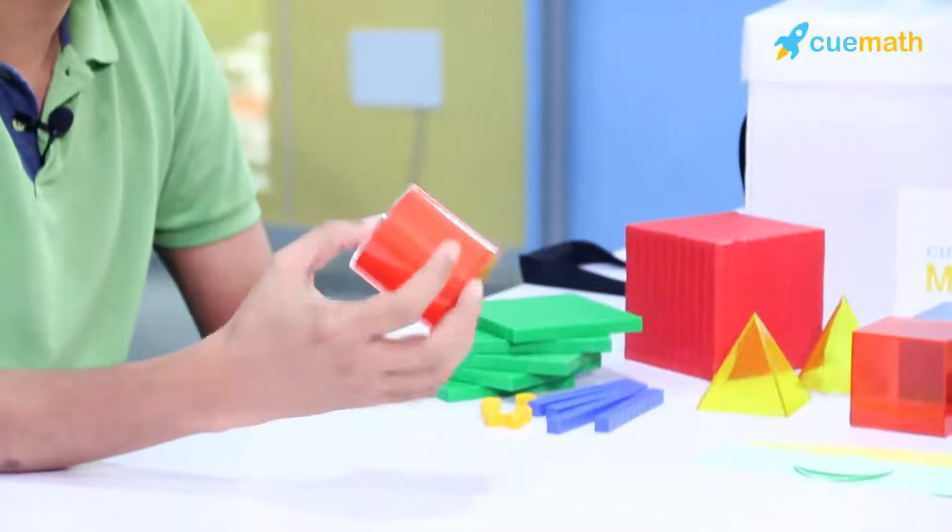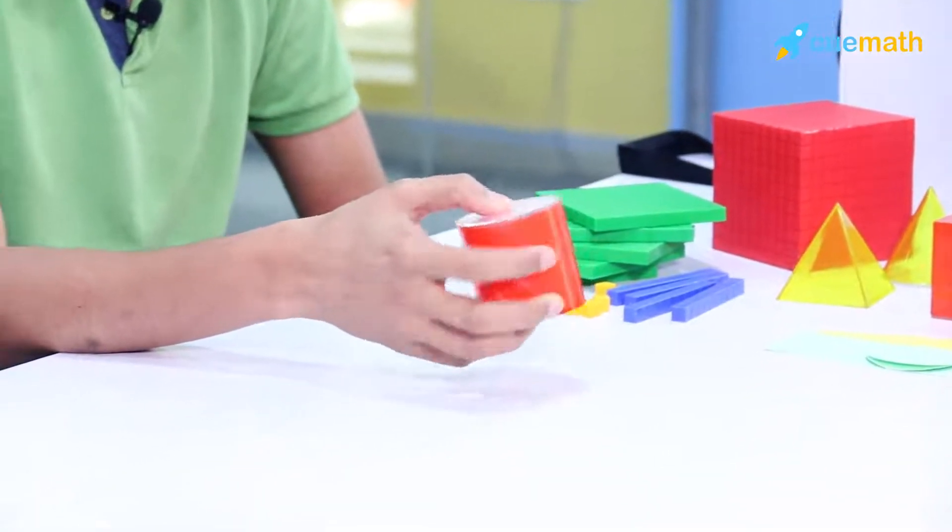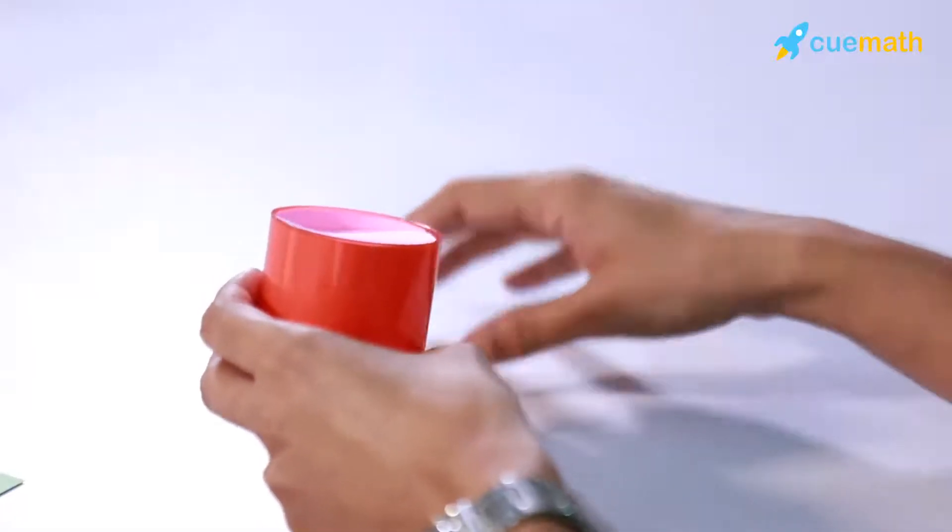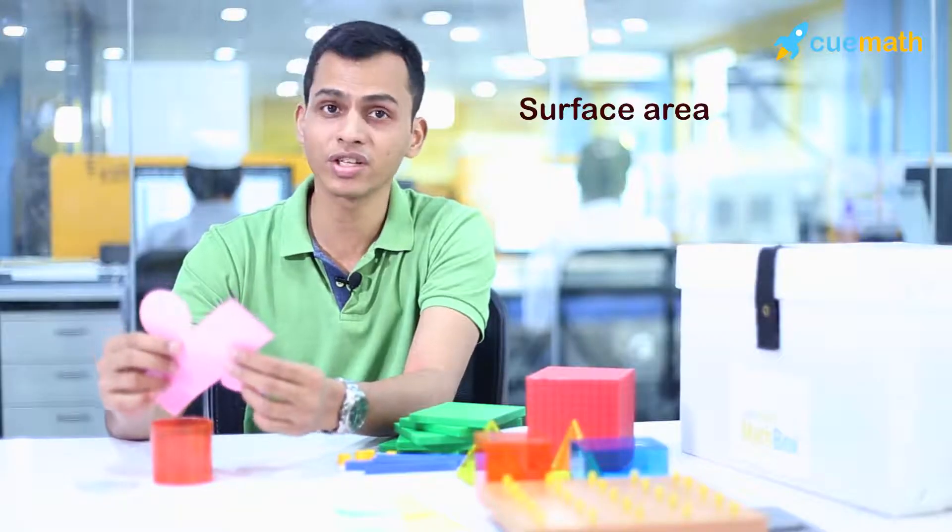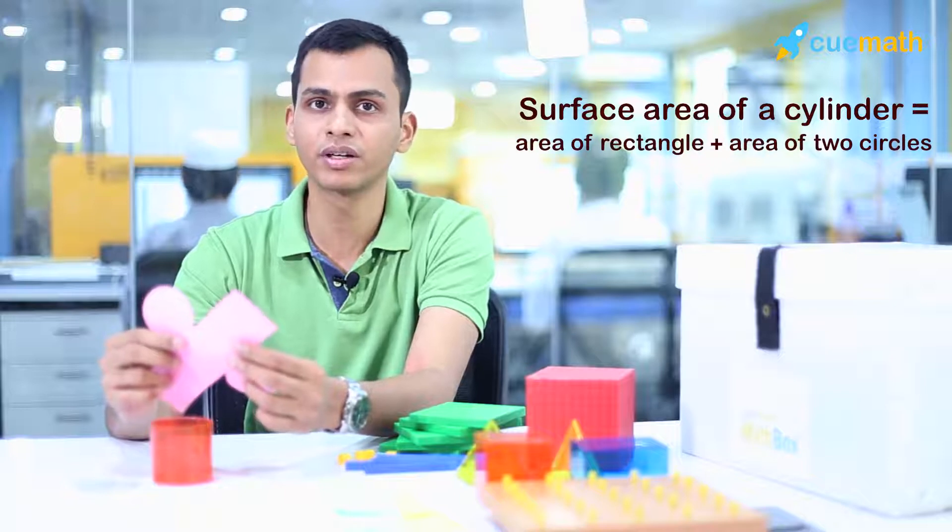So how would a QMath teacher go about helping a student discover this formula? Kids are given this to really understand how the shape works. So here you see that the cylinder is actually composed of a rectangle and two circles, which means that the surface area of a cylinder will simply be an addition of all these surface areas.